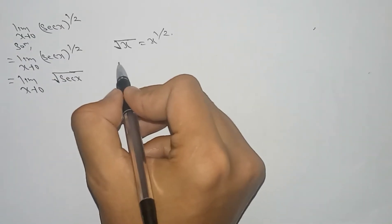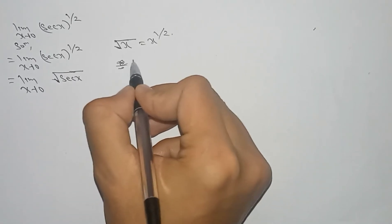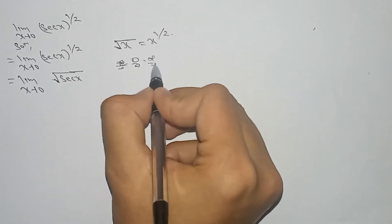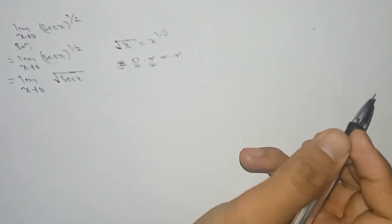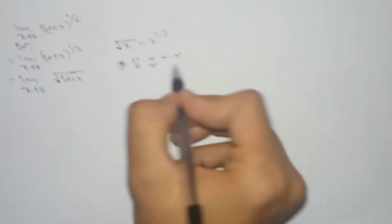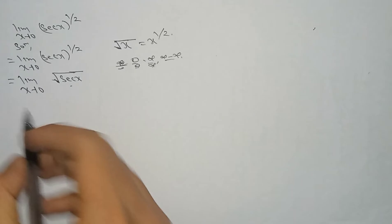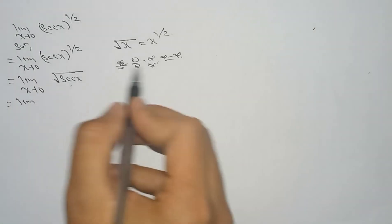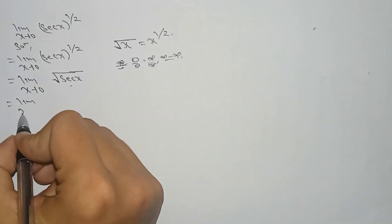In L'Hôpital's rule we have to make either 0 by 0 form or infinity by infinity form or infinity minus infinity form. But here it doesn't become any of these forms, so to make either 0 by 0 or infinity by infinity form, here I make it...